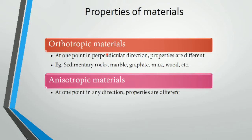Orthotropic materials have different properties in perpendicular directions. Examples include sedimentary rock, marble, graphite, and mica.